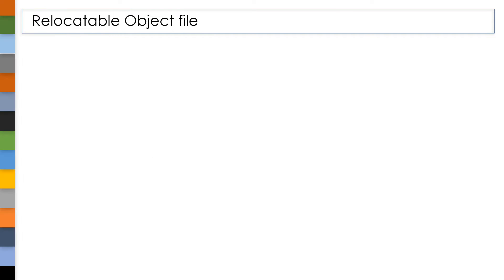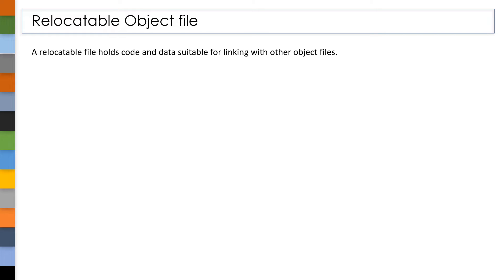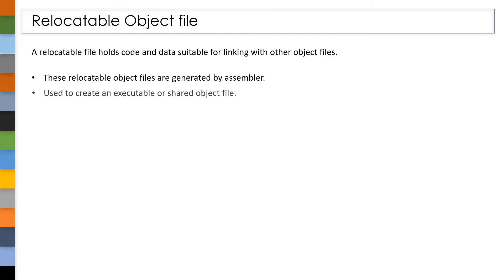What are these relocatable object files and what do they contain? Relocatable object files hold code and data which is suitable for linking with other object files. These files are generated by the assembler. We can create executable and shared object files by using these relocatable object files. You can use the below command to generate a relocatable object file from a .c file.